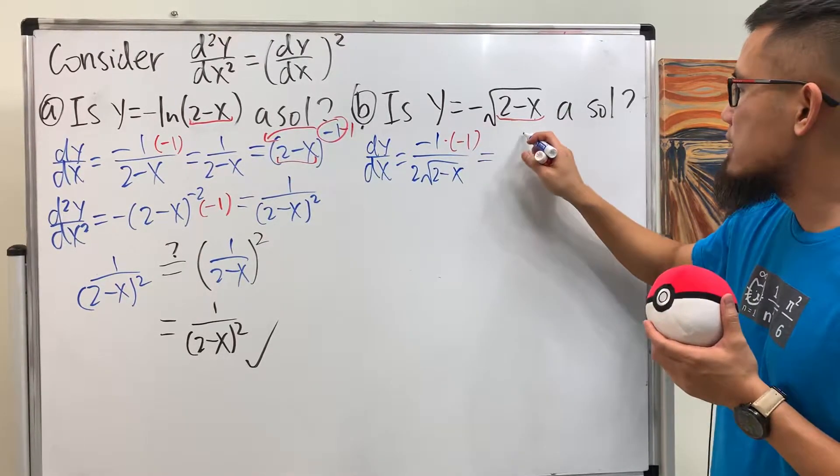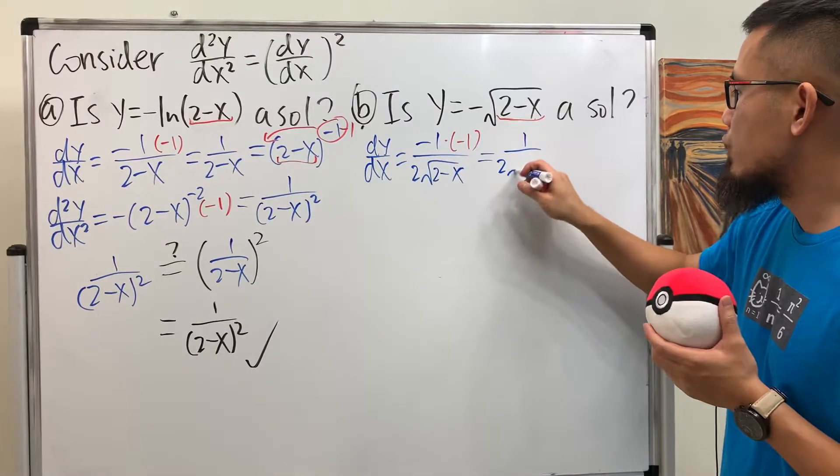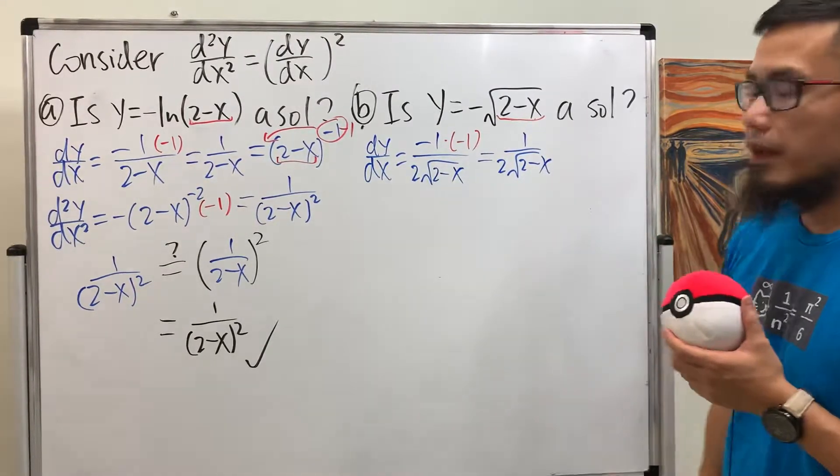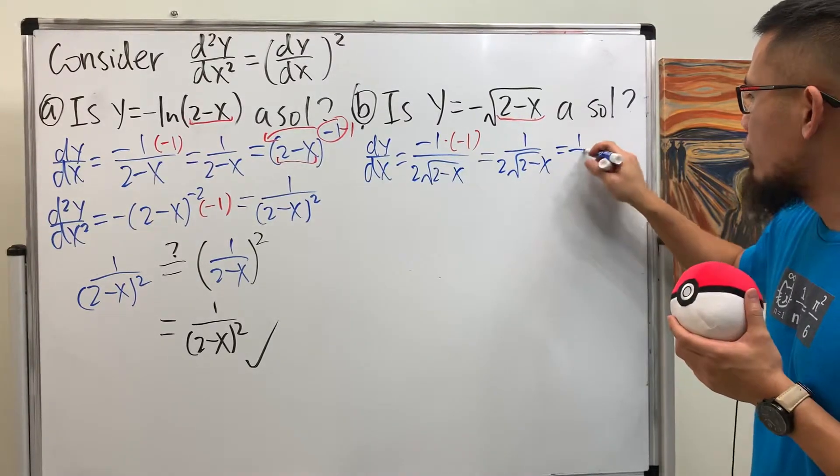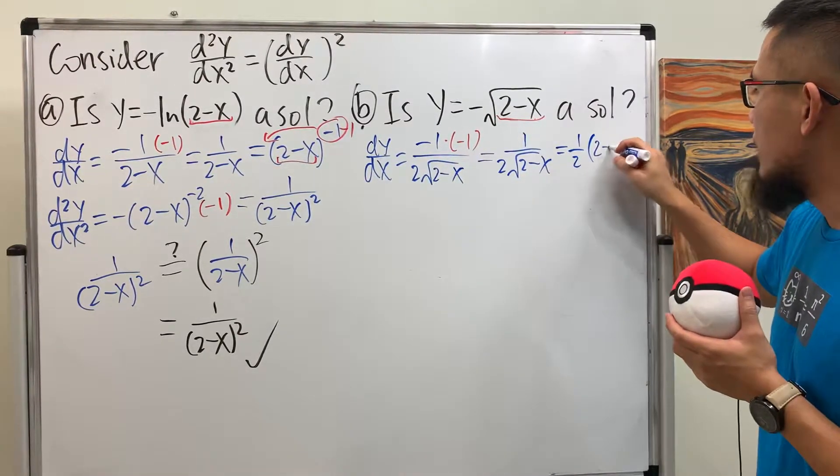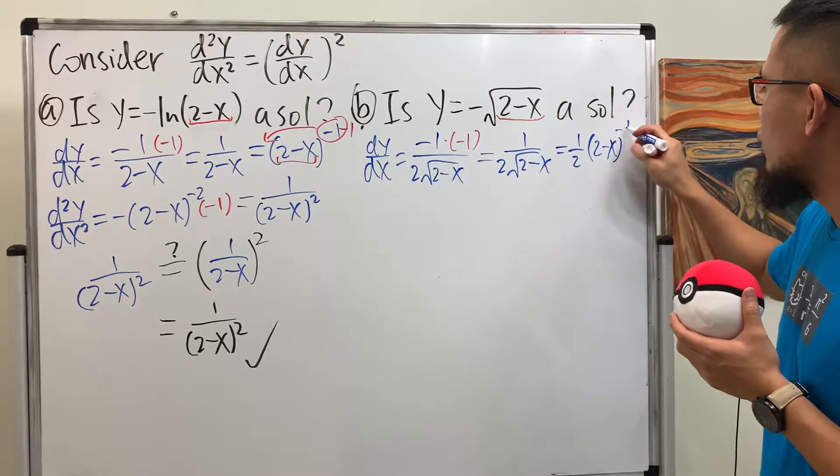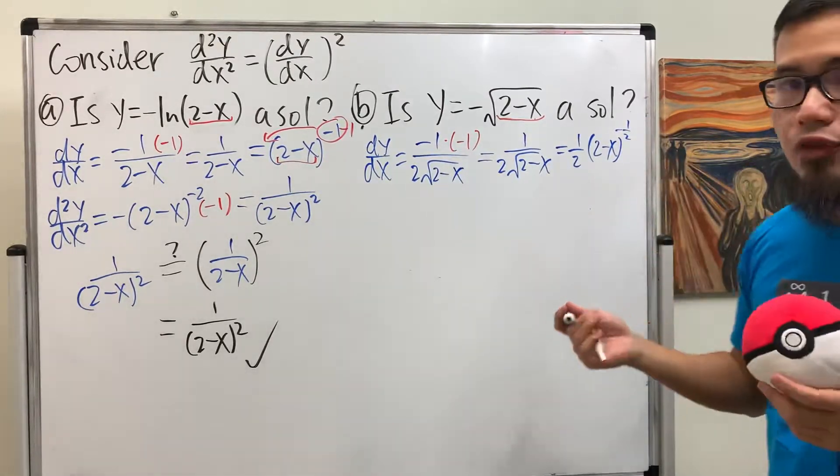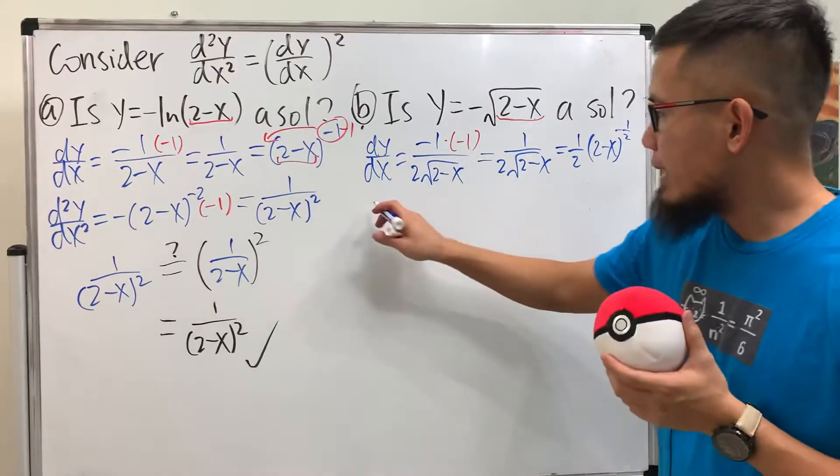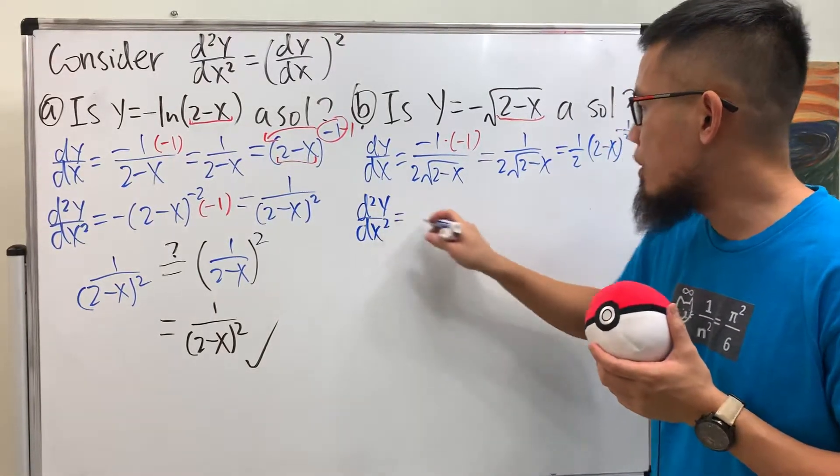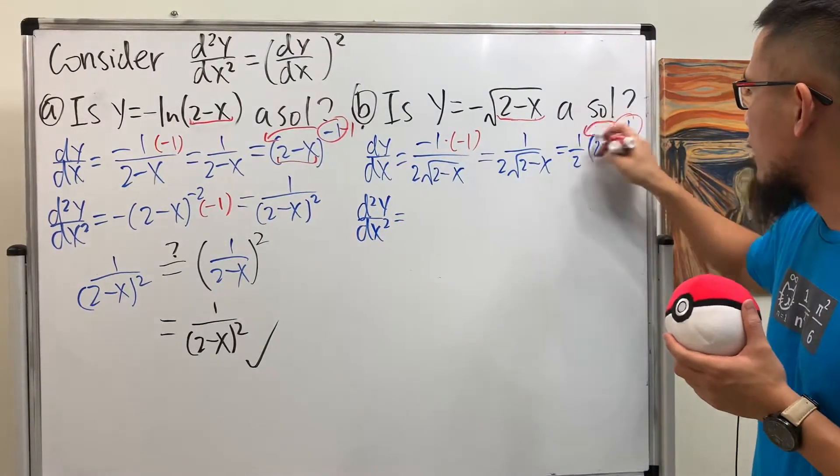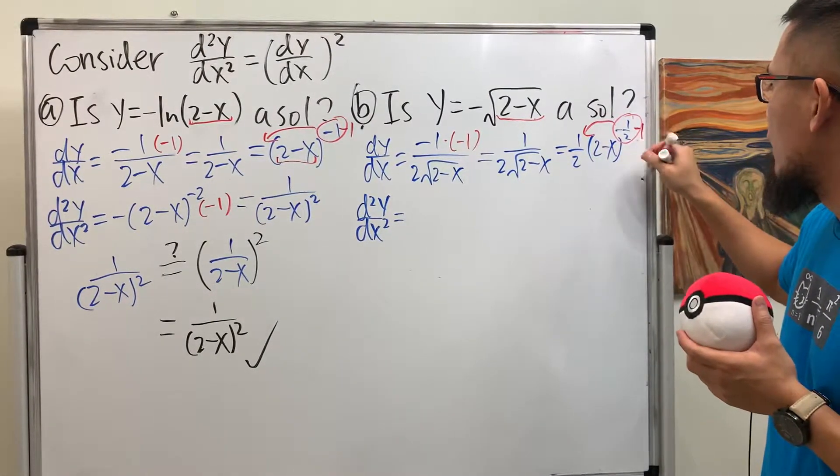Have a look. This becomes positive 1 over 2√(2-x). And right here, I'm going to write it as 1/2 times (2-x) to the negative 1/2 power. It's easier for us to do the derivative again.